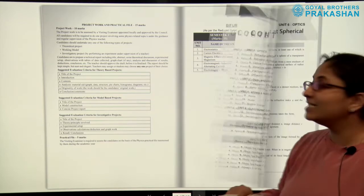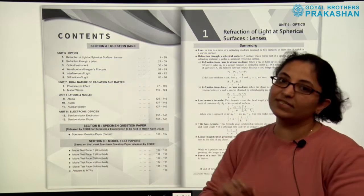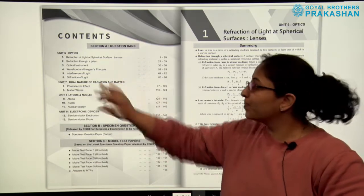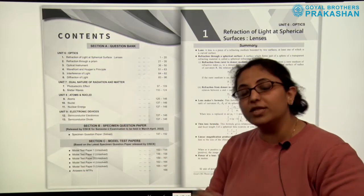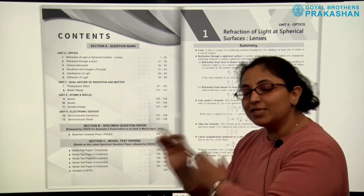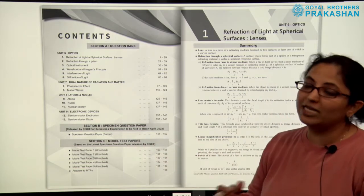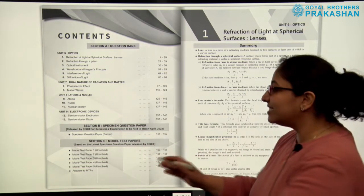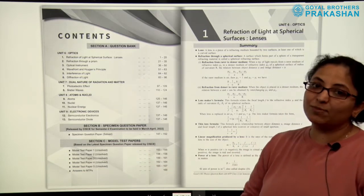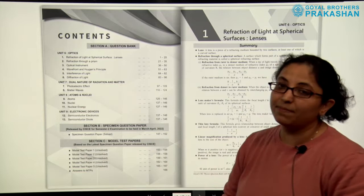After the syllabus, the contents section is given. The contents are divided into three sections: Section A is the question bank, with all units provided along with their question banks. Section B is the specimen question paper — the same paper released by CISCE. Section C is the model test papers, which are unsolved and strictly based on the specimen question paper.